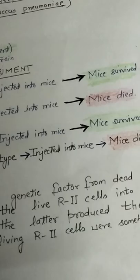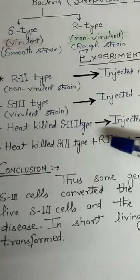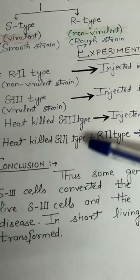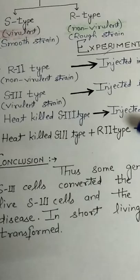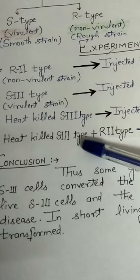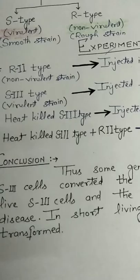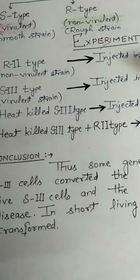Now the fourth case, which is very interesting. He took heat-killed S3 type bacteria and R2 type bacteria. R2 bacteria is not going to kill the mice, and heat-killed bacteria is also not going to kill the mice. So if we mix them, that should not kill the mice either.